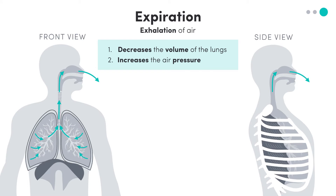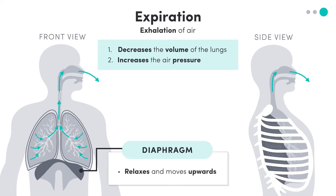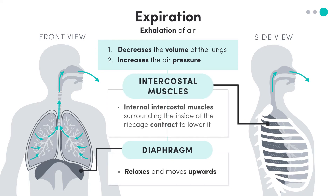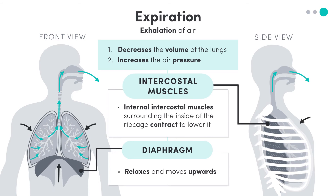In order to reduce the space in the lungs, the diaphragm relaxes and moves upwards, and the internal intercostal muscles layering the inside of the rib cage contract to lower it.